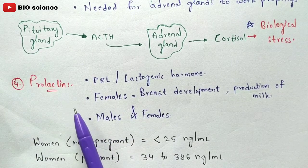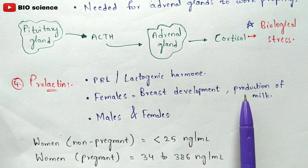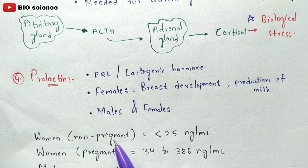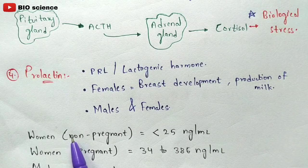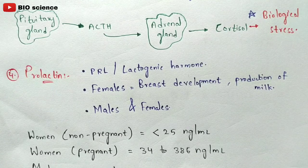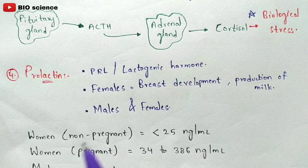Prolactin can be seen in both males and females. In females, it is mainly used for breast development and the production of milk. In non-pregnant women, the prolactin range is less than 25 nanograms per ml. In pregnant women, the levels should be 34 to 386 nanograms per ml. In males, it should be less than 15 nanograms per ml, though the function of prolactin in males is still unknown.